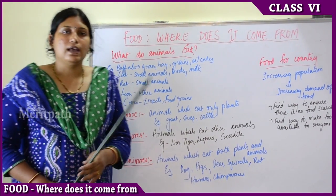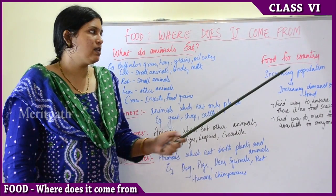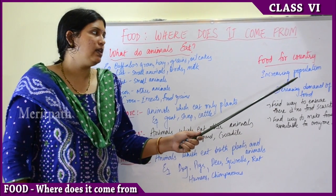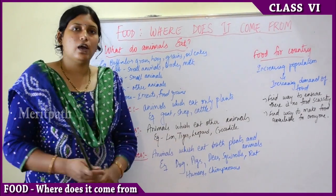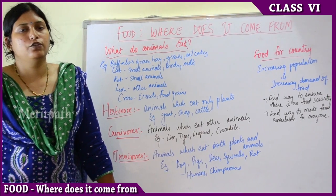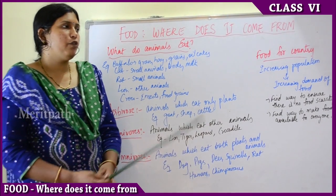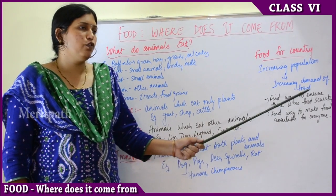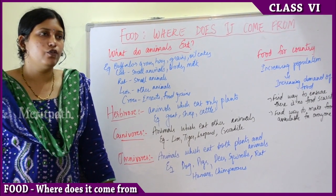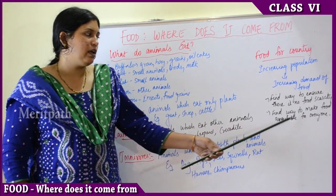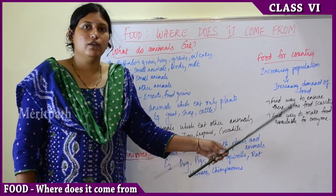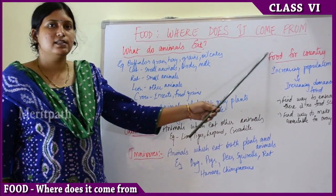As the world population is increasing, the demand for food is also increasing. With more people, the requirement for food grows greatly, so we have to find ways to ensure there is no food scarcity or shortage. We should make sure that food is available to each and everyone on the earth — that should be our goal. This concludes the topic of food and where it comes from.